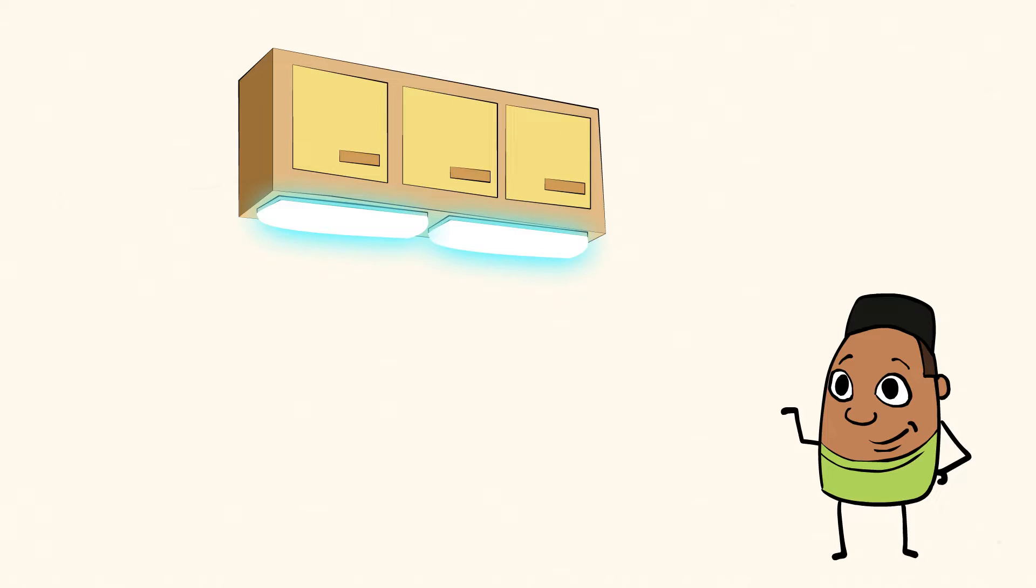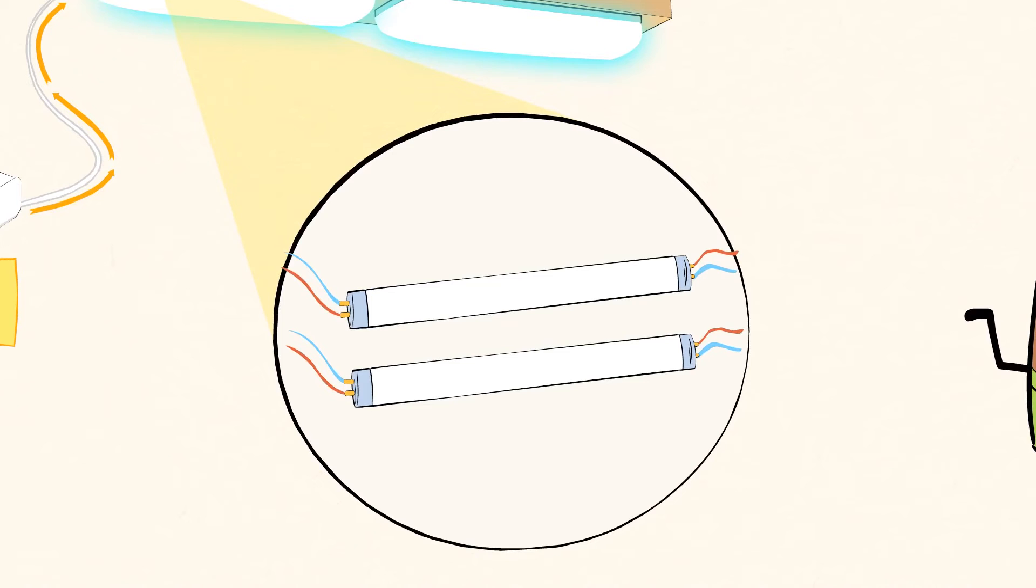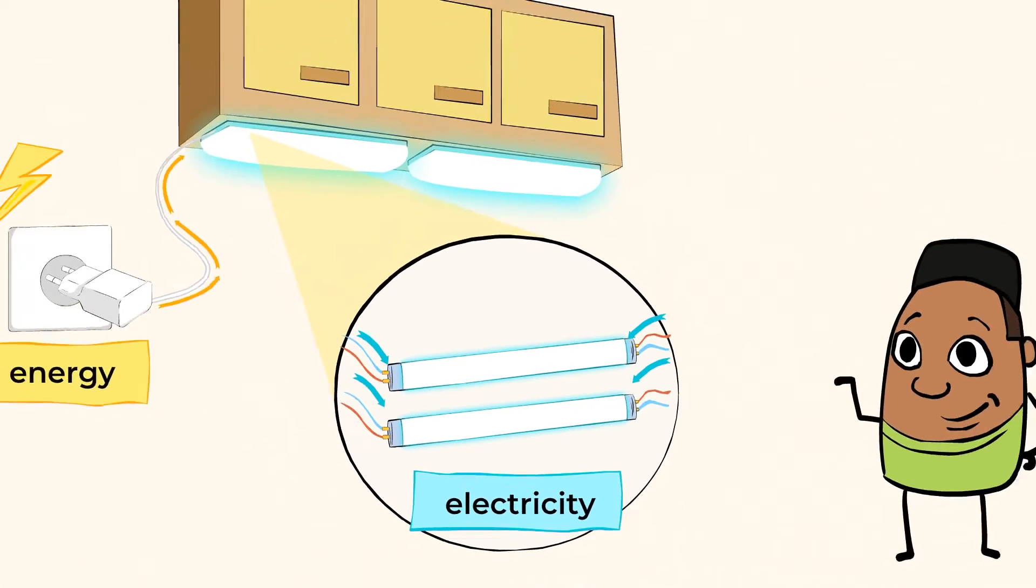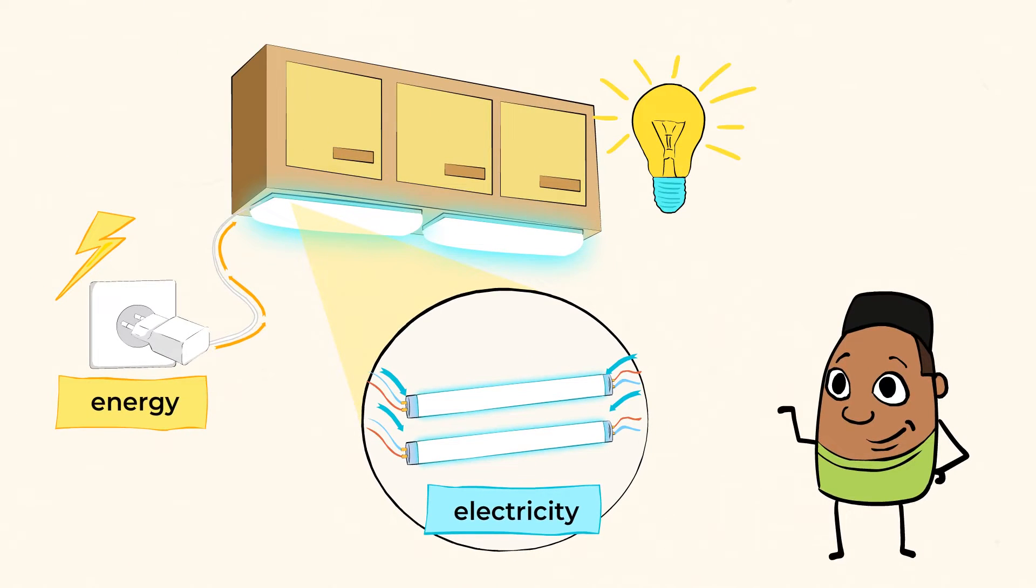But don't look right into the light bulb. It's plugged into the wall, which supplies energy to the cord. Now that energy is transferred through the wires in the lamp, and the electricity travels through tiny wires in the light bulb, causing it to light up. This light shining into the room is just another example of the way that energy is transferred.